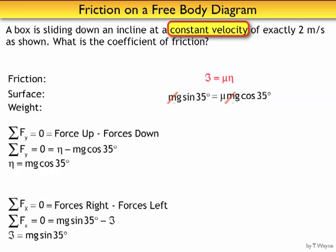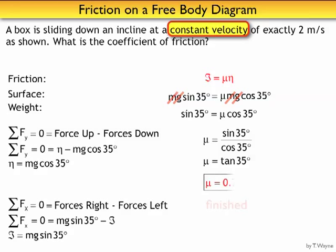The masses divide out, gravity divides out. So now sine 35 is equal to mu cosine 35. So mu is equal to sine 35 divided by cosine 35, which means mu is equal to tangent 35. Therefore, mu is equal to 0.7 for this coefficient of friction. And that's all I had to do.